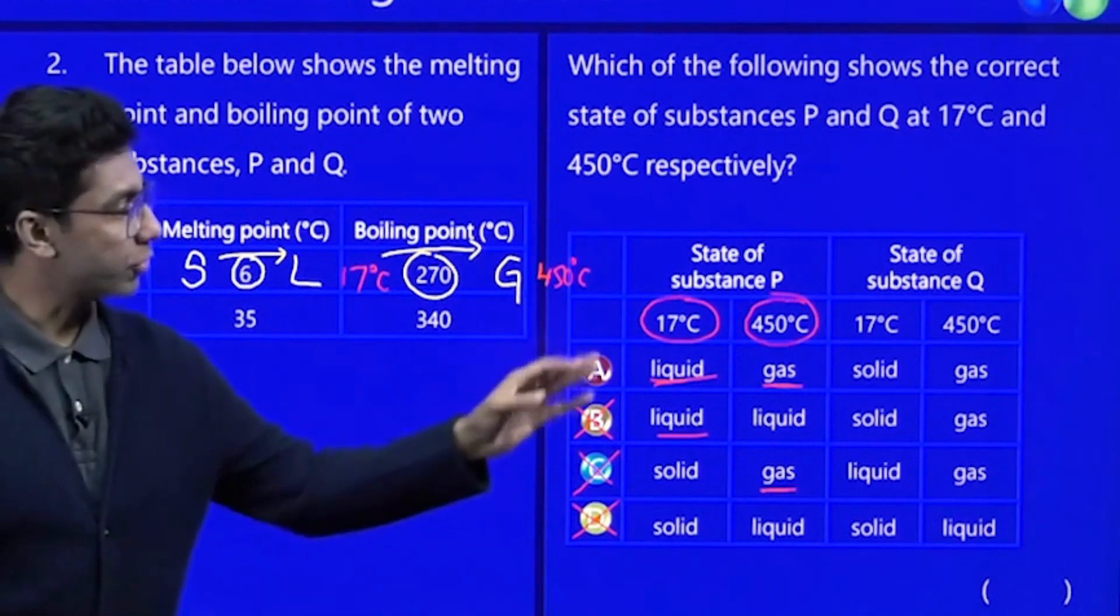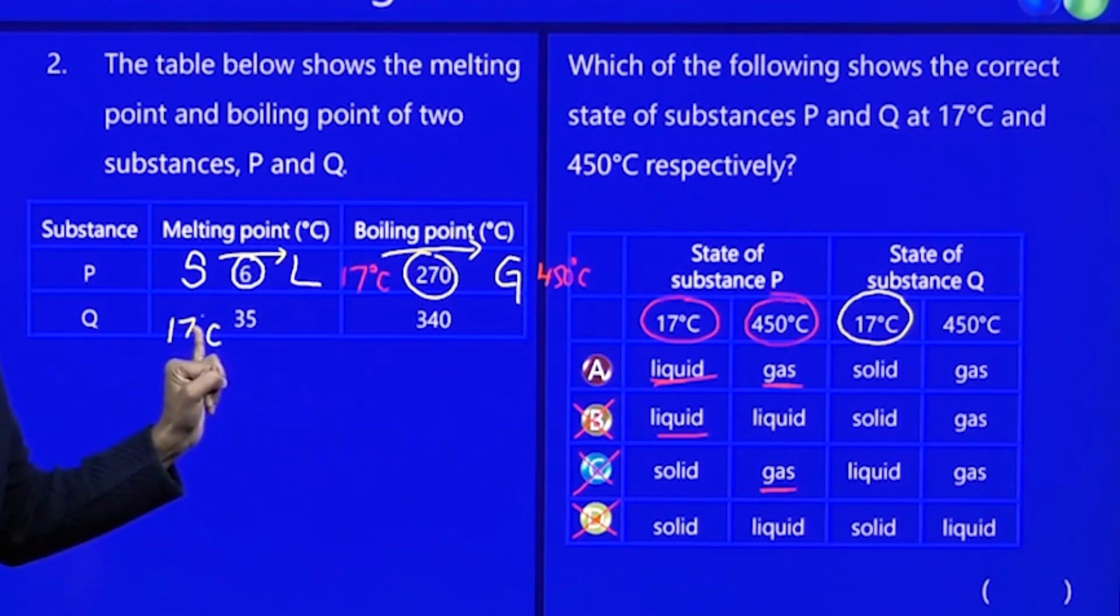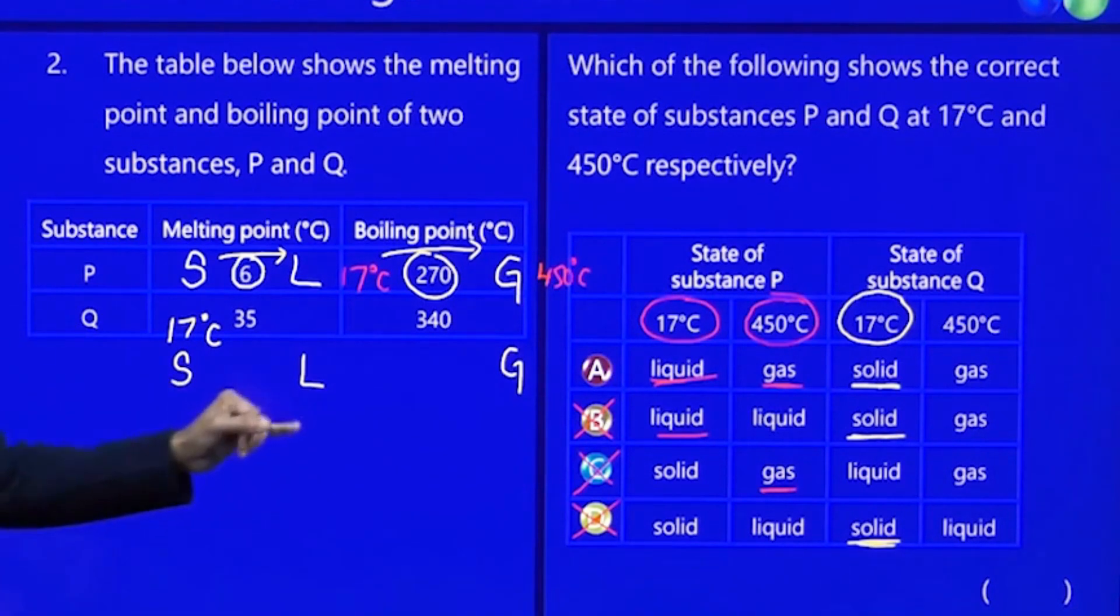So we just need to confirm for state of substance Q. So let's look at state of substance Q. At 17 degrees Celsius, again, we go back and we look at 17. It's going to be here. 17 is here in the solid zone. Because again, you've got to have a solid liquid gas zone. And since 17 is in the solid zone, we go up there and we just highlight this. Very simple.